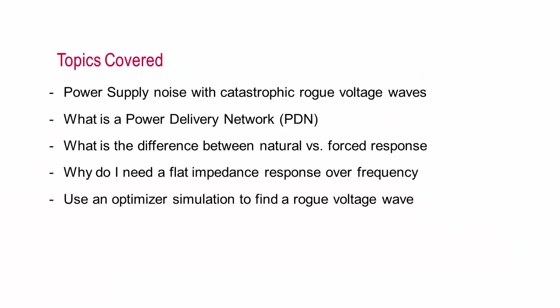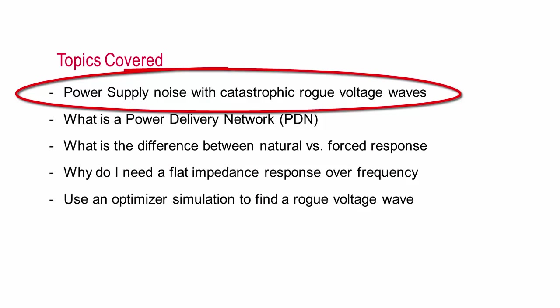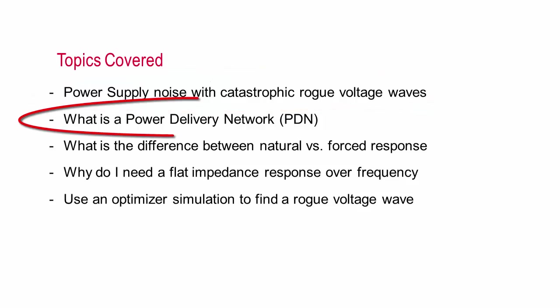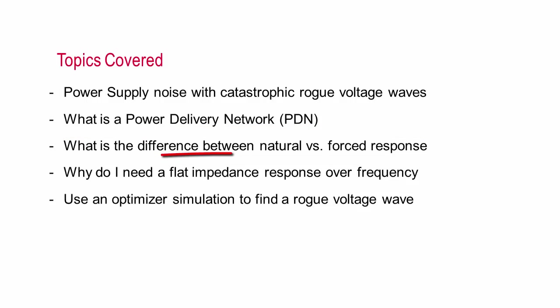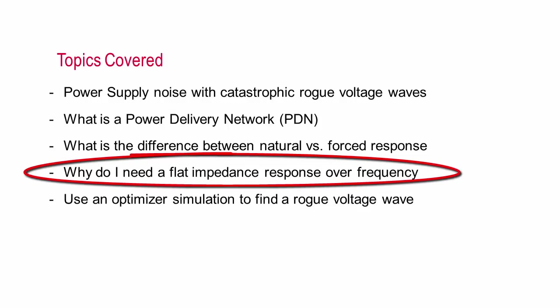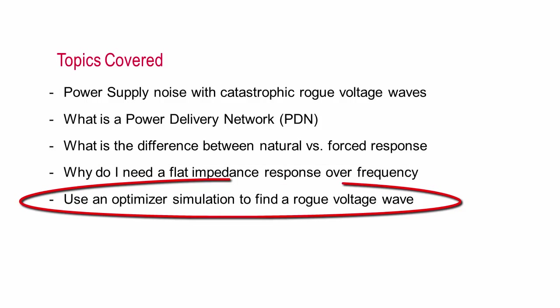This material forms the basis for designing low noise power supplies and power distribution networks. We'll cover five key points in this presentation today: What rogue waves are and how they generate catastrophic voltages, what a power distribution network is and how its impedance requirements are determined, how power systems can respond to load demands in two ways—natural response and forced response, why flat impedance versus frequency performance is more important than the maximum impedance, especially when multiple resonances exist, and how an optimizer simulation can easily determine the load pattern required to generate the largest rogue wave.